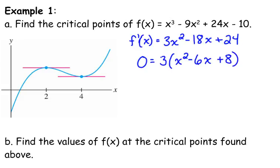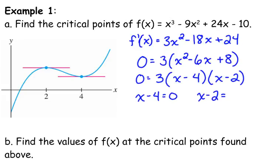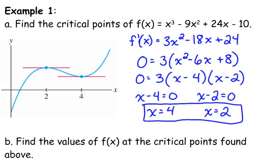Take out a 3. We're left with x² - 6x + 8. And that factors into (x - 4)(x - 2). 3 never equals 0, so we don't have to worry about that piece. So, we get that at 4 and at 2, those are our critical points. 2 and 4 are the critical points.